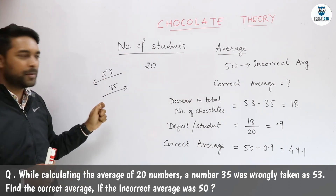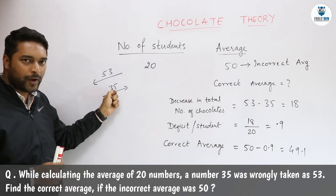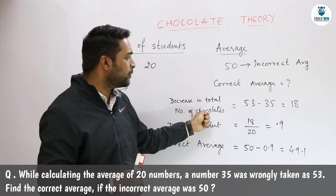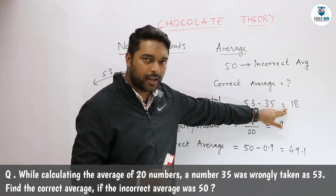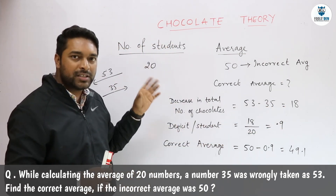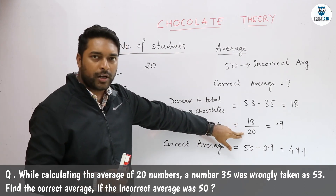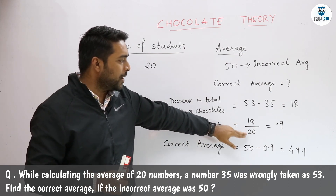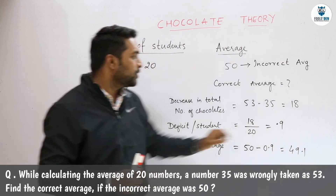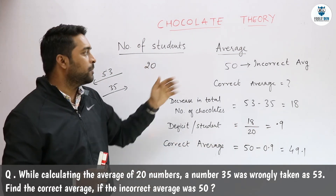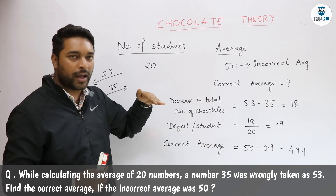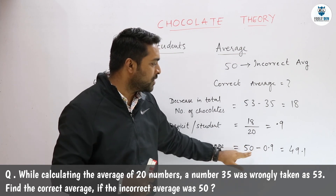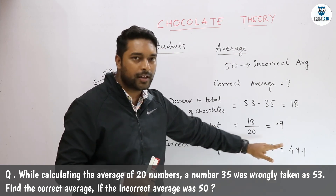But actually, the person who is joining has 35 chocolates, which means he has a shortage of 18 chocolates. So the decrease in the total number of chocolates will be 53 minus 35, which is 18. This deficit will be equally distributed among the total number of students: 18 divided by 20 equals 0.9. So there will be a shortage of 0.9, meaning the average will decrease by 0.9. The initial average was 50, so the new average will be 50 minus 0.9, which is 49.1.